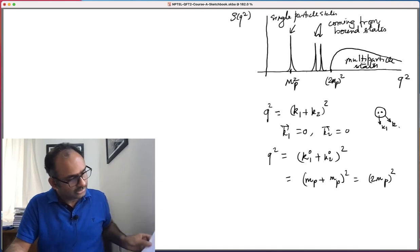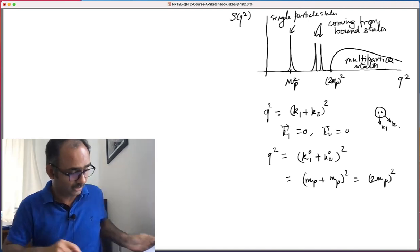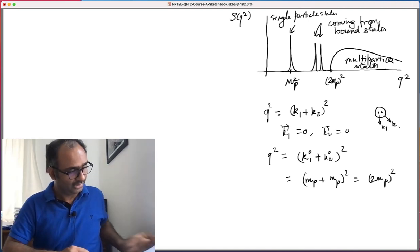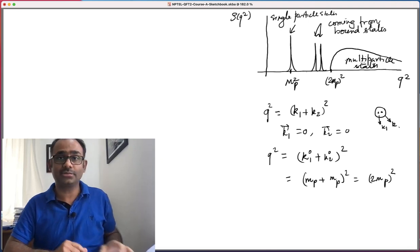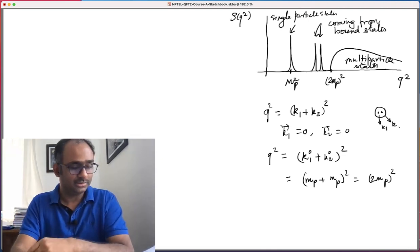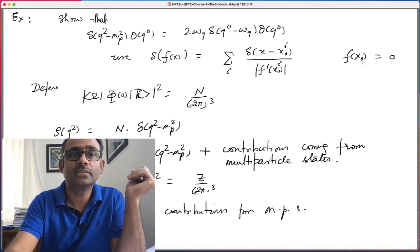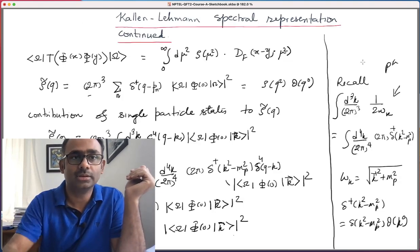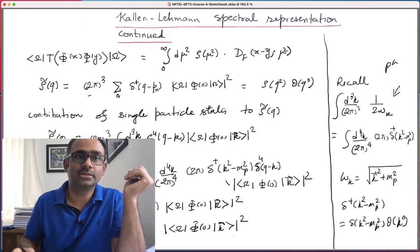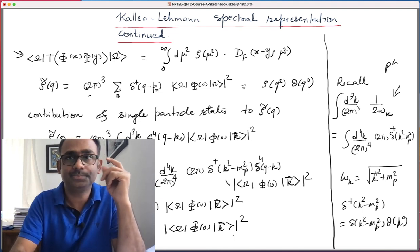So the full structure of ρ(q²) has: delta functions from the single-particle state, additional delta functions from any bound states, and a smooth continuum contribution from multi-particle states starting at q² = 4mp². I will talk about the Fourier transform of this object in the next video.